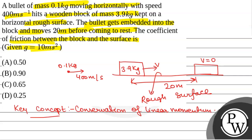So applying conservation of linear momentum we have initial momentum is equal to final momentum. Now initial momentum will be equal to 0.1 that is mass of bullet into velocity of bullet that is 400 meter per second and final momentum will be equal to 0.1 plus 3.9 that is mass of bullet plus block into velocity of bullet plus block that is v.